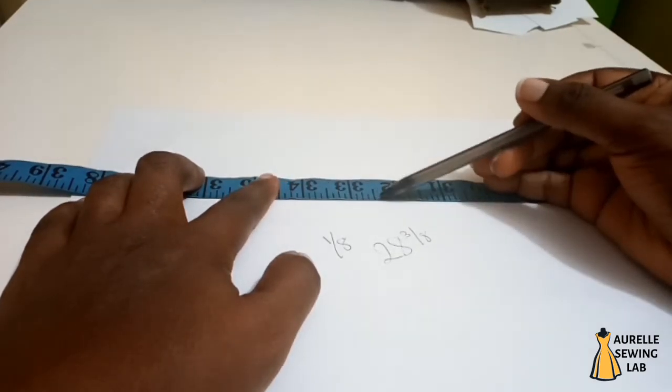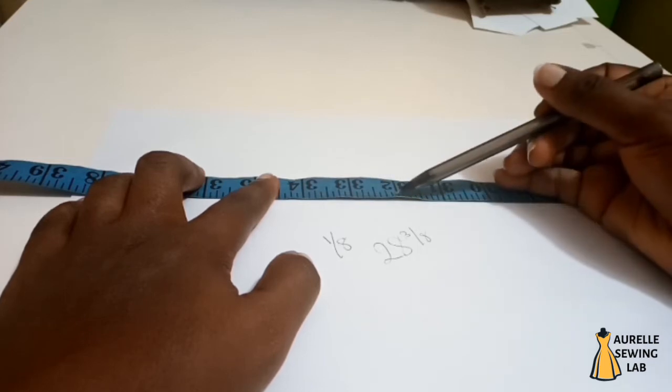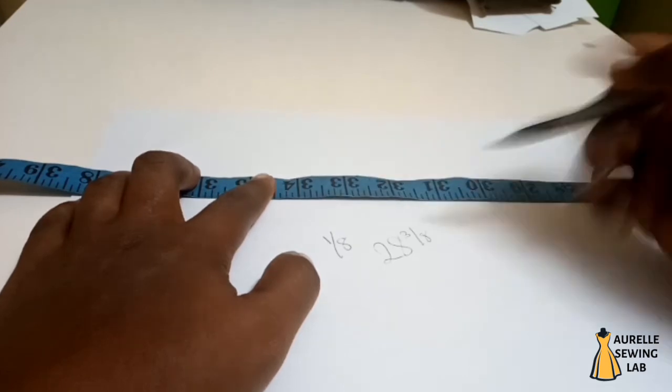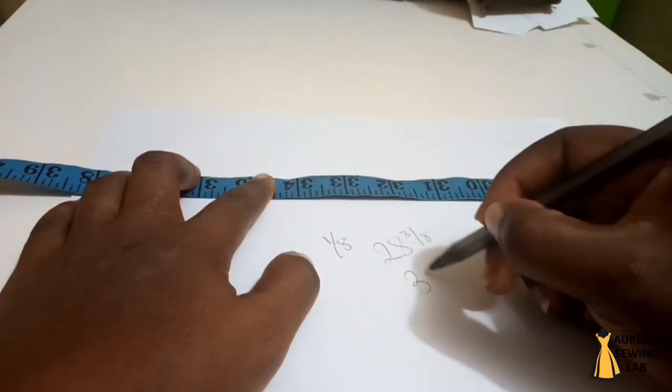I'm going to count from this first short line here, one two three four five, that's five. So my measurement now is going to be recorded as thirty two five eight.